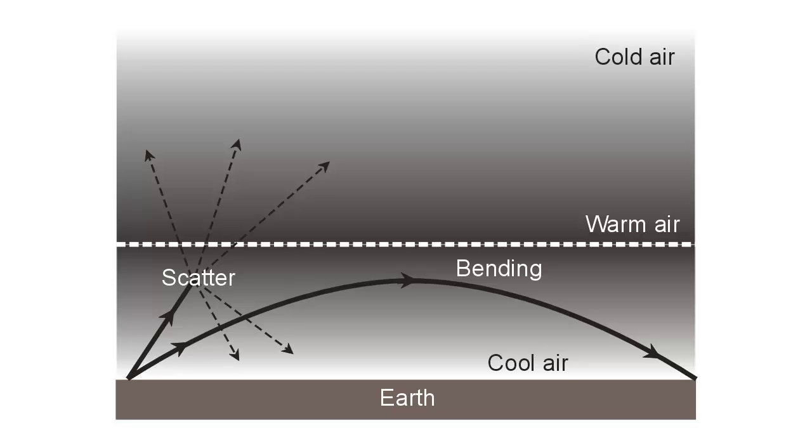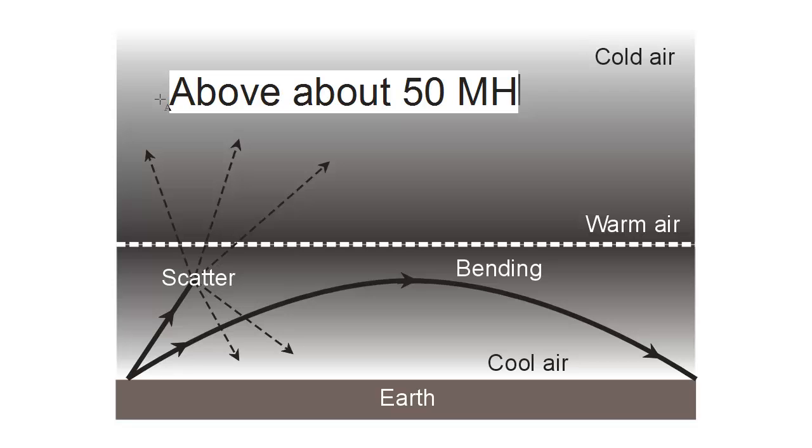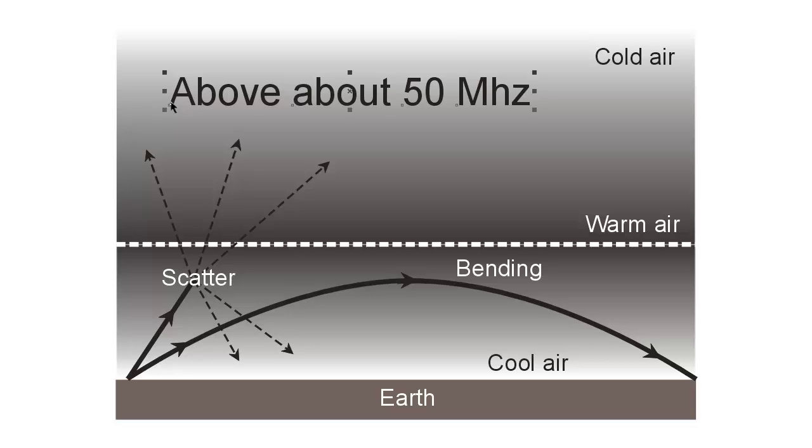However, on frequencies where the waves really are comparatively short and the frequencies really are comparatively high, particularly those frequencies above about 50 megahertz in ham radio terms, that's the 6 meter band and above. On these frequencies, the lower atmosphere of the earth, the troposphere, will affect propagation.